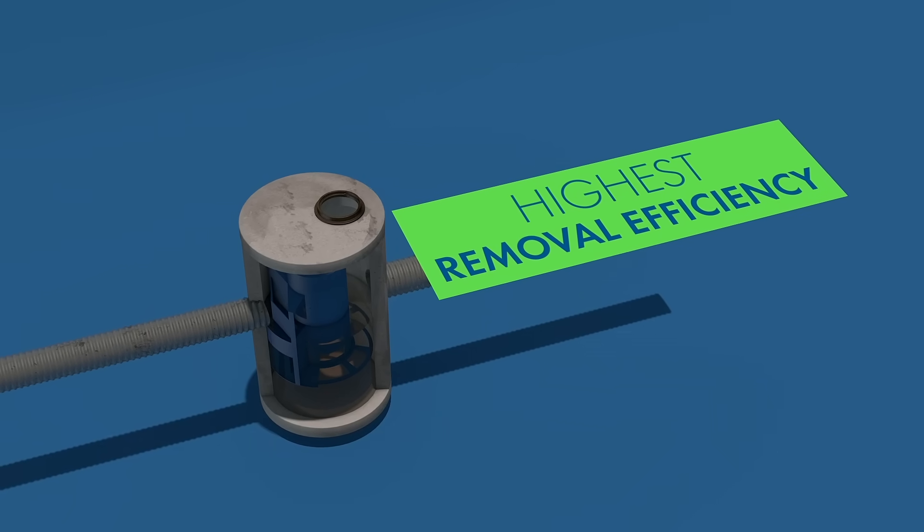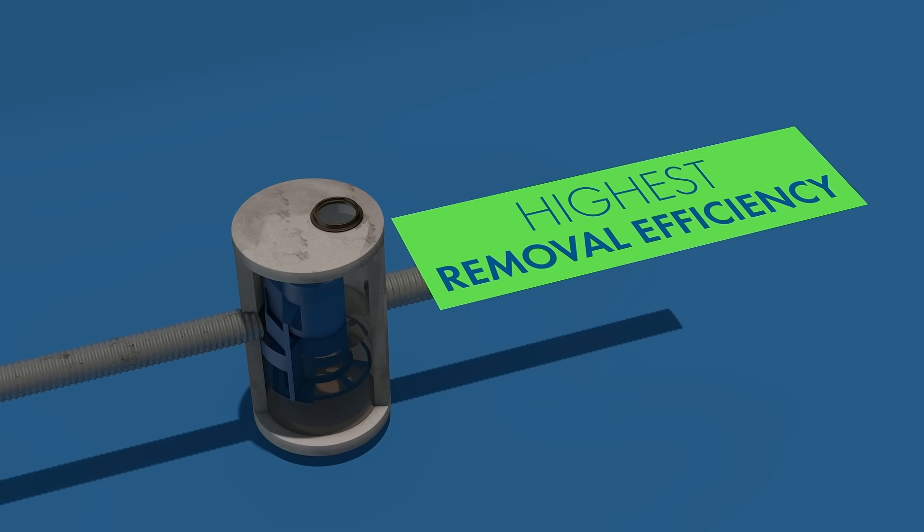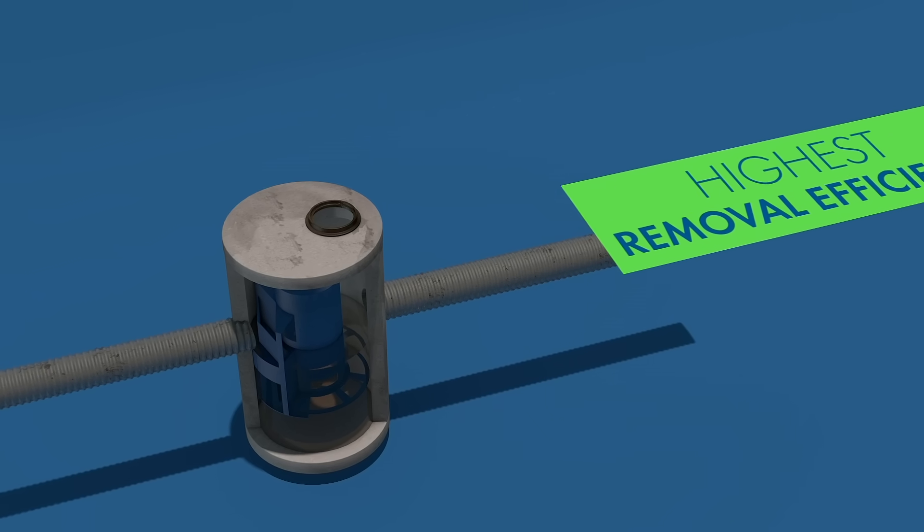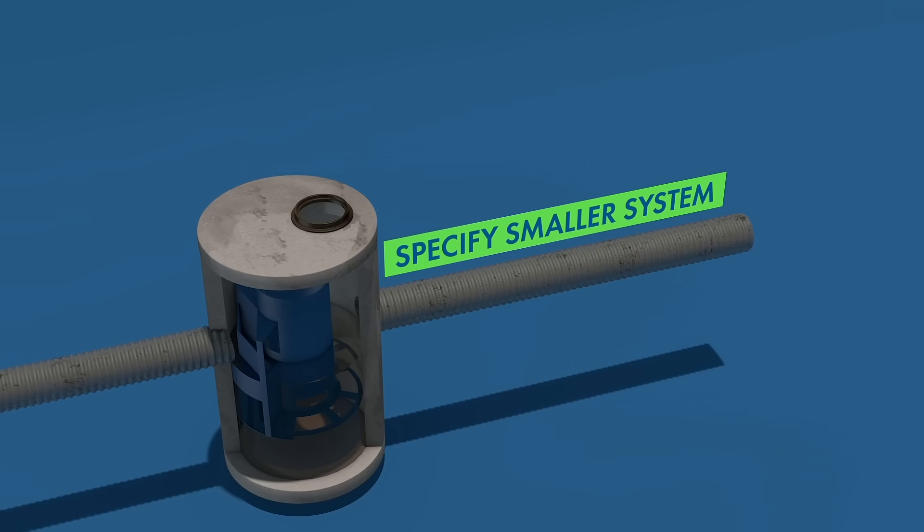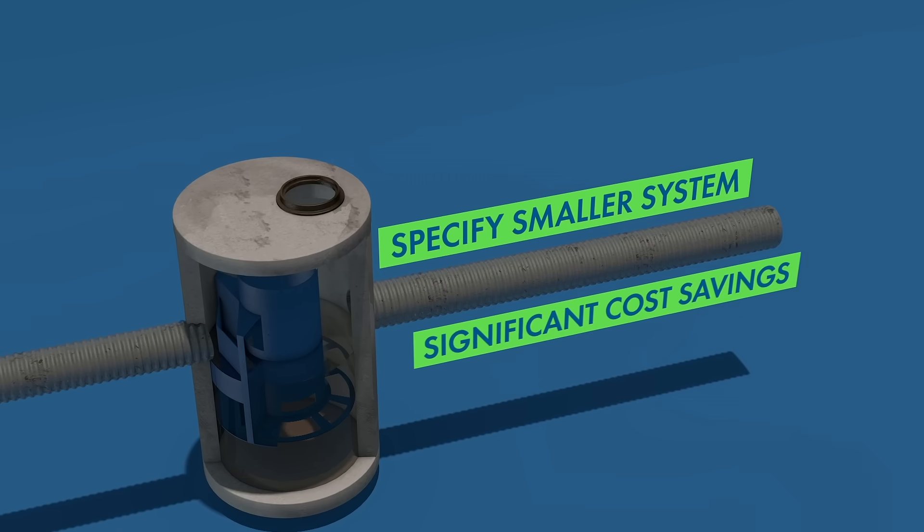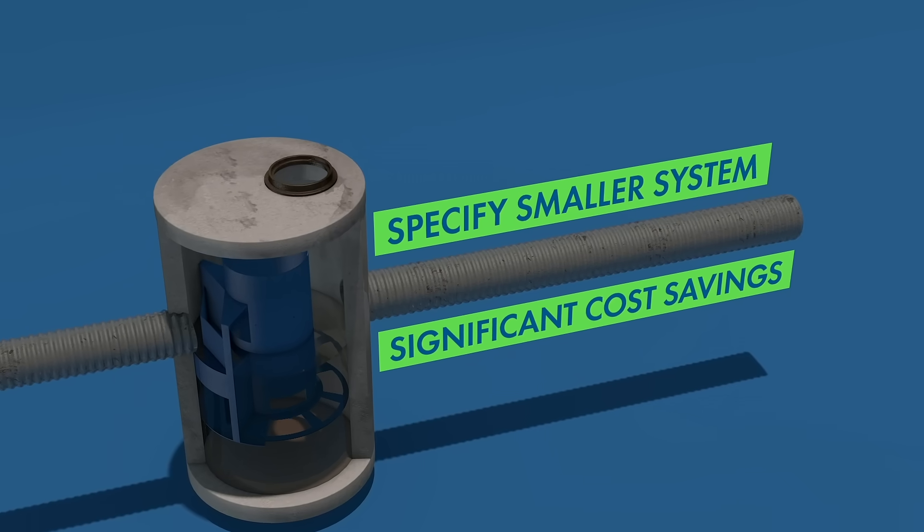The Cascade Separator provides the highest removal efficiency of any CONTECH HDS system. By using a Cascade Separator, you may be able to specify a smaller size system compared with other HDS systems, resulting in significant cost savings.